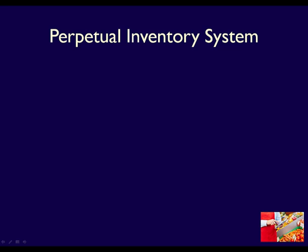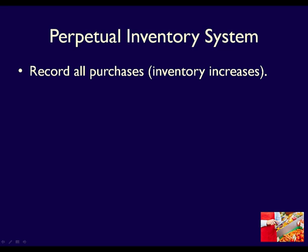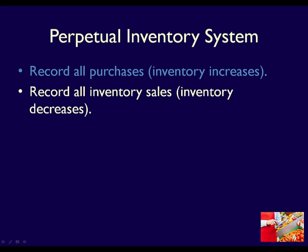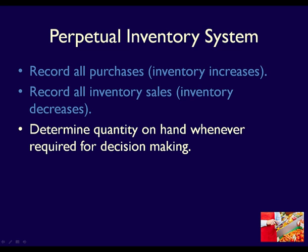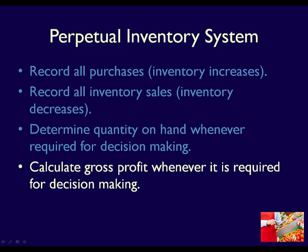Let's summarize the perpetual system's tracking of inventory. Using the perpetual inventory system, you record all your inventory purchases when they happen and all your inventory sales when they happen. This means that inventory quantities are constantly updated and known, allowing you, the business owner, to make decisions about inventory requirements. Using that information, you can calculate the gross profit margin — which is sales less the cost of inventory — at any time during the period, allowing decisions about pricing and profitability whenever needed.